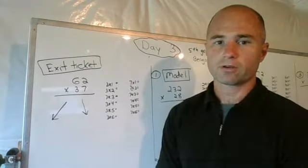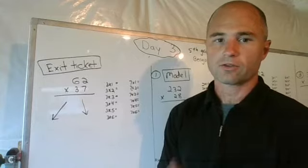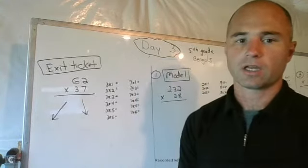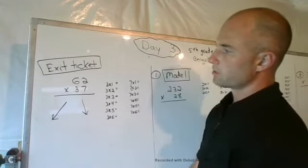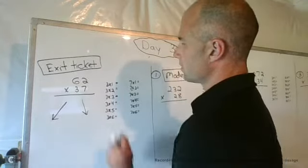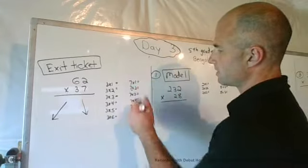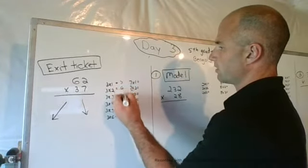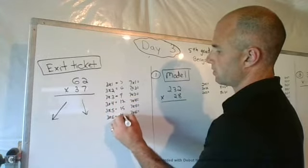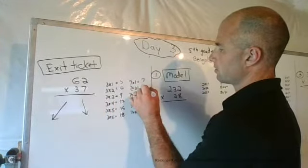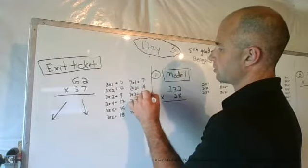Alright, fifth grade Bengals, welcome to day three. Let's go over yesterday's day two exit ticket: 62 times 37. So I wrote my three times tables, I wrote my seven times tables, and now I'm going to write the products of each of them so we can use this to help us check, just to make sure we don't make any multiplication mistakes.